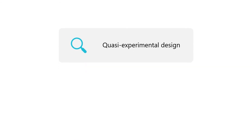According to Levy, a quasi-experimental design is like a true experimental design, but participants or subjects are not randomly assigned to groups. Quasi-experimental designs may involve experimental groups only, or both experimental and control groups. Since randomization is not present, the selection threat to internal validity is always present, and pre-existing differences between groups may exist.